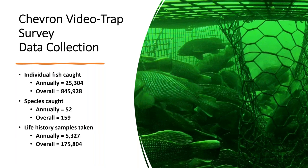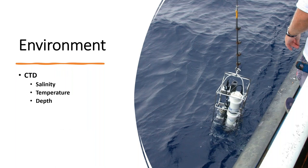Through 33 years of the chevron video trap survey, we've captured overall 845,000-plus fish, with about 25,000 fish encountered annually between us and our partners. Annually we encounter about 52 species, but overall we've captured 159 different species in these chevron traps. We've also taken over 5,000 life history samples annually, amounting to over 175,000 in all over this time period — and that's not even counting the months' worth of video recordings from the cameras.